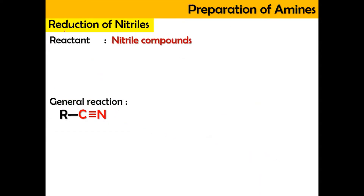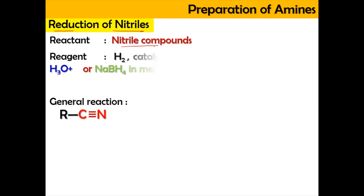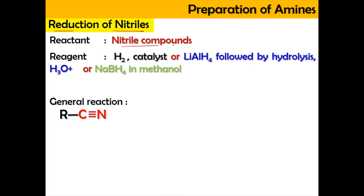Now we're going to look at the next preparation, which is the reduction of nitrile. The reactant needed is the nitrile compound. The reagents used to reduce nitrile are: hydrogen gas with a catalyst (platinum or nickel), or lithium aluminium hydride followed by hydrolysis (H3O⁺ or H2O with H⁺), or sodium borohydride (NaBH4) in methanol (CH3OH).